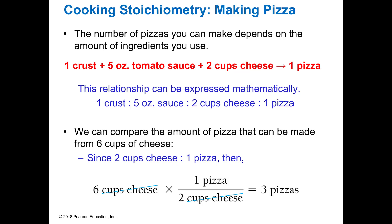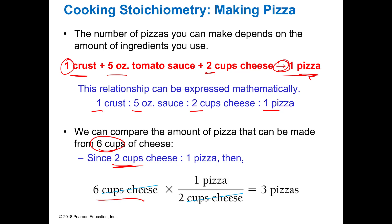It's just like if you think about making a pizza. We used to get Chef Boyardee and make a crust — about five ounces of tomato sauce, two cups of cheese — and together those would form one pizza. The relationship is one crust to five ounces of sauce to two cups of cheese equals one pizza. So if we had six cups of cheese, six times one pizza over two cups gives us three pizzas, as long as we had plenty of everything else.